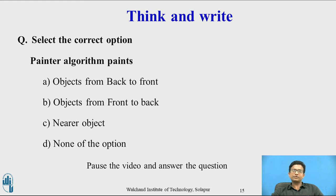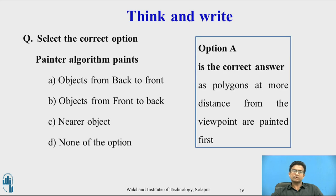Please pause the video and answer the question. Select the correct option: The Painter's Algorithm paints — option A: objects from back to front; option B: objects from front to back; option C: nearer object first; option D: none of these. Option A is the correct answer, as polygons more distant from the viewport are painted first.